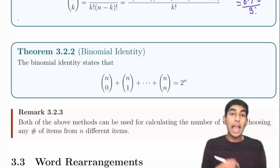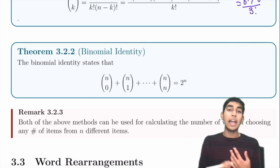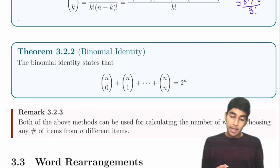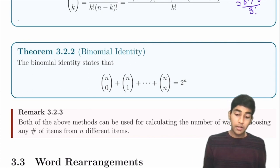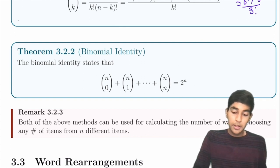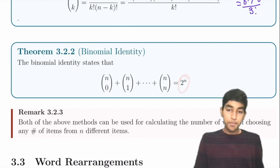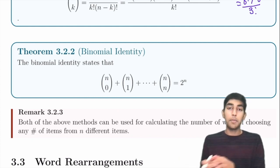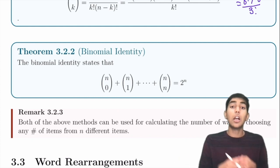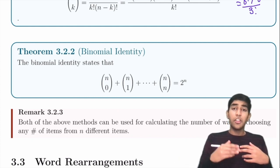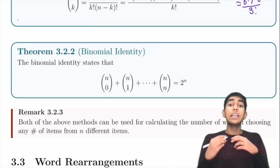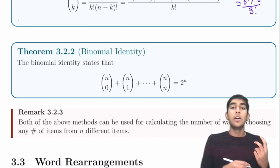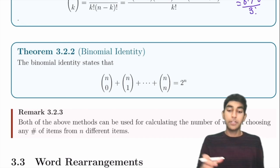The binomial identity states that C(n,0) + C(n,1) + ... + C(n,n) = 2ⁿ. This is useful — for example, with 10 pizza toppings, each topping can be included or not (2 choices each), giving 2¹⁰ total combinations.